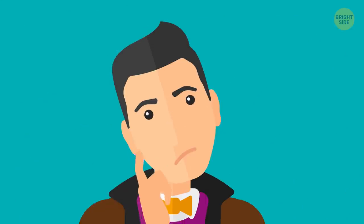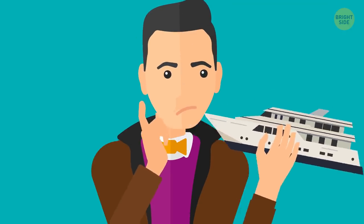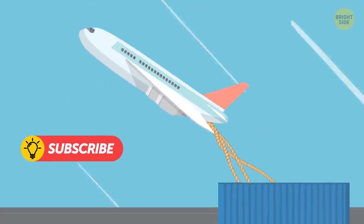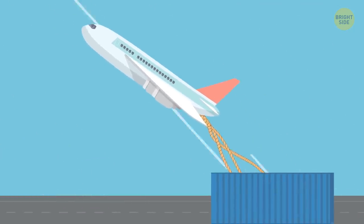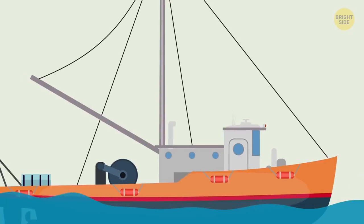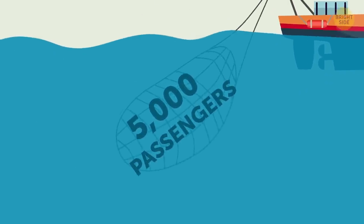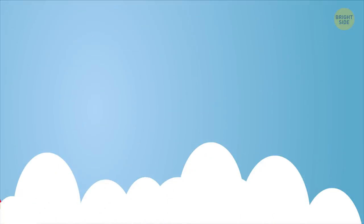Some people might ask why we even use ships if planes are so much faster. Well, here's the catch. You won't be able to carry thousands of tons of weight by plane. The same goes for the number of passengers. Some ships can carry more than 5,000 passengers in one go. Try to fit that crowd in an airliner.